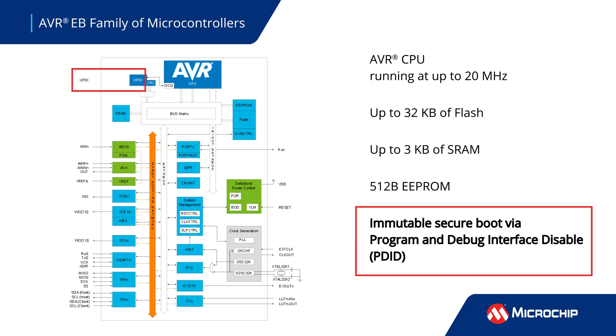The program and debug interface disable feature can enhance your design security. After the initial programming of the device is complete, you can use this feature to disable programming and debugging.